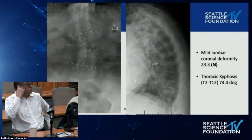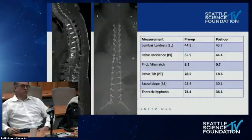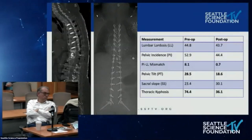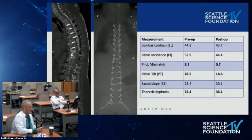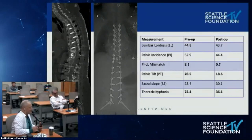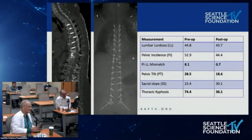Chapman then critiques the construct, noting only two rods are present and asking whether this is undertreatment and whether more rods should have been used. Hart says he probably would have placed four rods, but won't critique the decision-making. In a situation where L3-to-pelvis discs are nearly bone-on-bone and there's a large fusion bed without need for laminectomy, the purpose of a more rigid construct is to increase fusion rate, which he believes is high here.